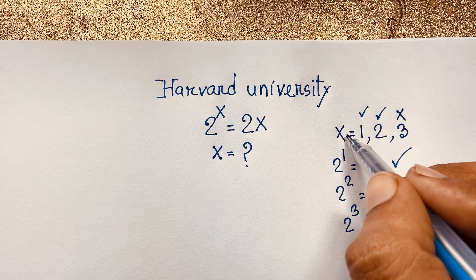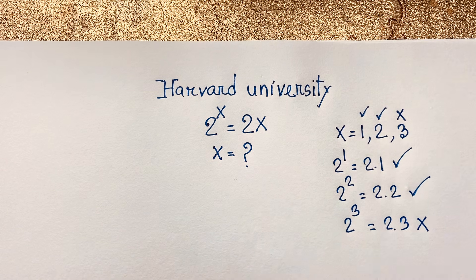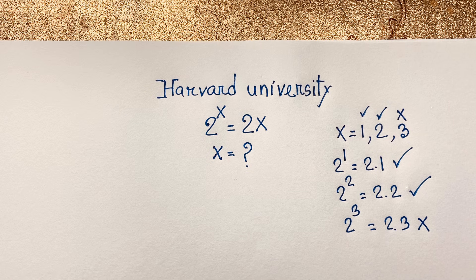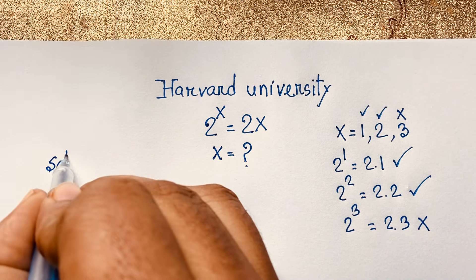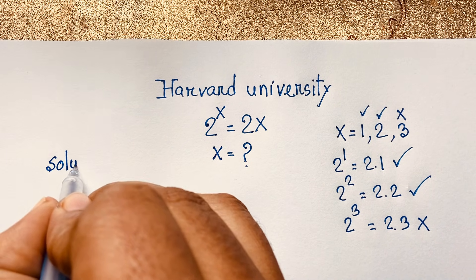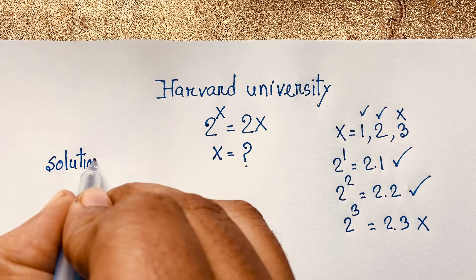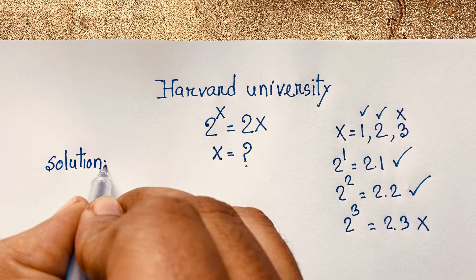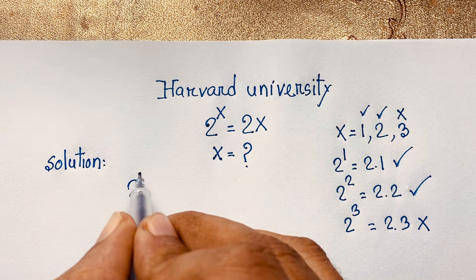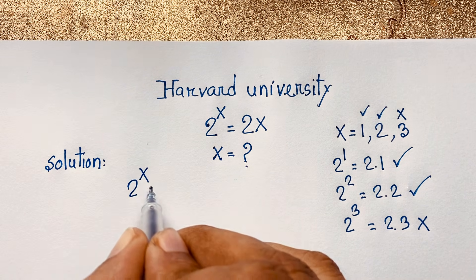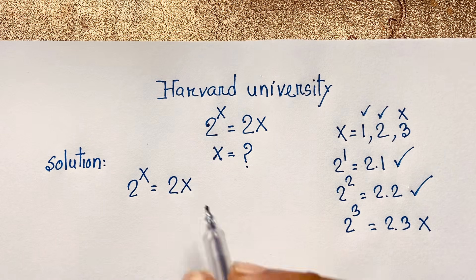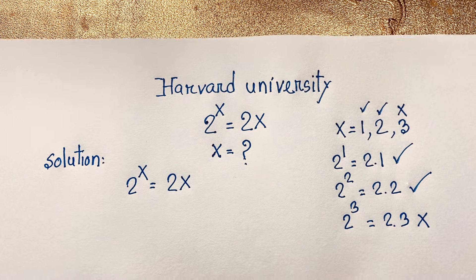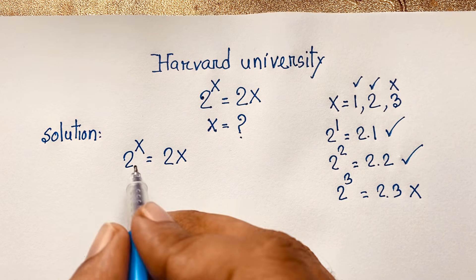So we find that x equals 1 and x equals 2 are both solutions. But how to simplify and properly solve this interesting math question? I will solve this step by step. Our question is 2 to the power x equals twice x. I divide both sides by 2 to the power x.